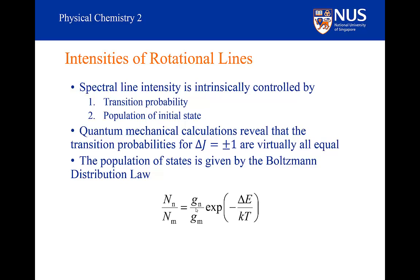To complete the expression, the ratio of the degeneracy is multiplied by the exponential of minus delta E over kT, where delta E is the difference in energy between the n-state and the m-state, and kT is the amount of thermal energy available to excite molecules into any excited state.